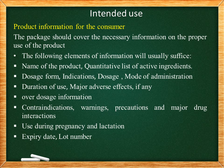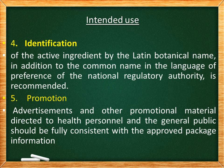Herbal formulations are also required to provide product information for the consumer, which includes the name of the product, a quantitative list of active ingredients, dosage form, mode of administration, contraindications, warnings, precautions, use during pregnancy and lactation, expiry date, and lot number. Identification of the active ingredient by the Latin or botanical name in addition to the common name is required. Regarding promotion, advertisements and other promotional material directed to health personnel and the general public should be fully consistent with the approved package information.